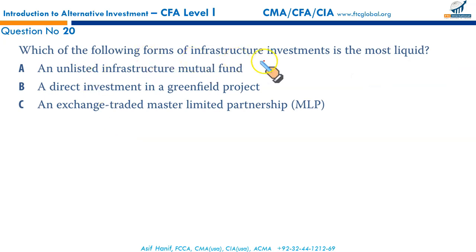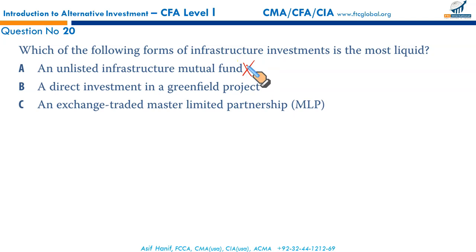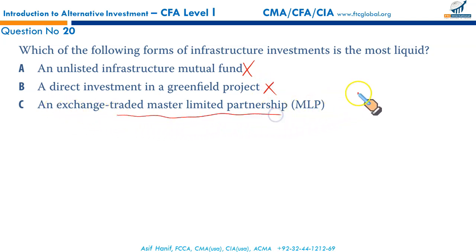Which of the following forms of infrastructure investment is most liquid? An unlisted infrastructure mutual fund — no. A direct investment in a greenfield project — even harder. An exchange-traded master limited partnership — this provides the much-needed liquidity. Exchange-traded MLPs provide the benefit of liquidity. That makes C the right answer.